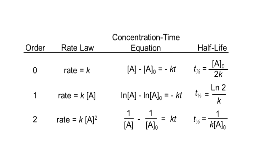For a zero-order reaction, the rate is equal to K times A raised to zero, which is simply K. The concentration-time equation is A minus A-zero equals minus KT. Substituting A as A-zero divided by 2, we can get the half-life T-half as A-zero divided by 2K.